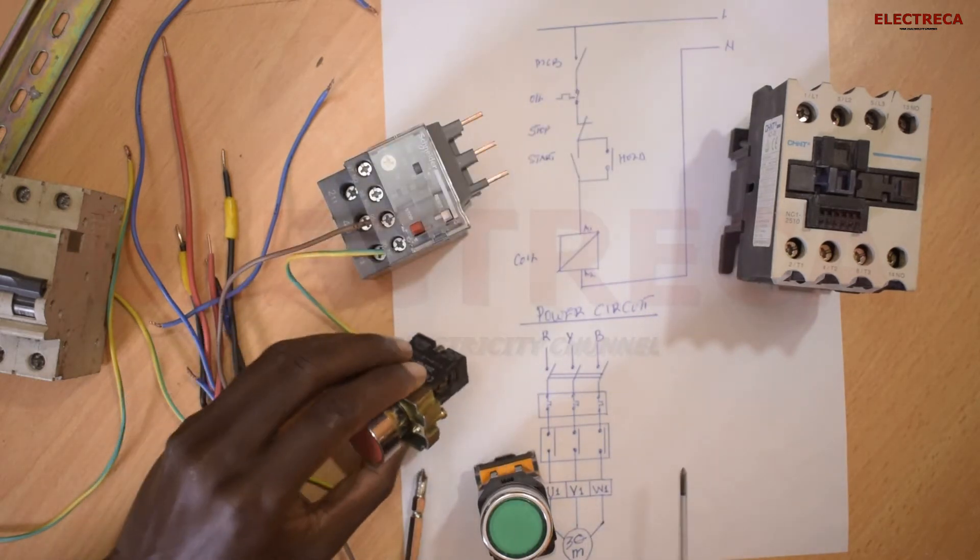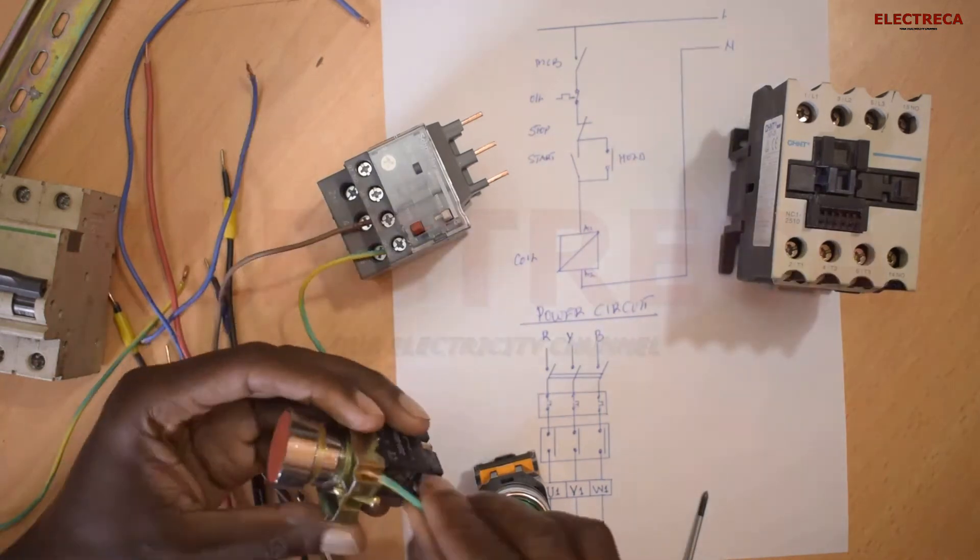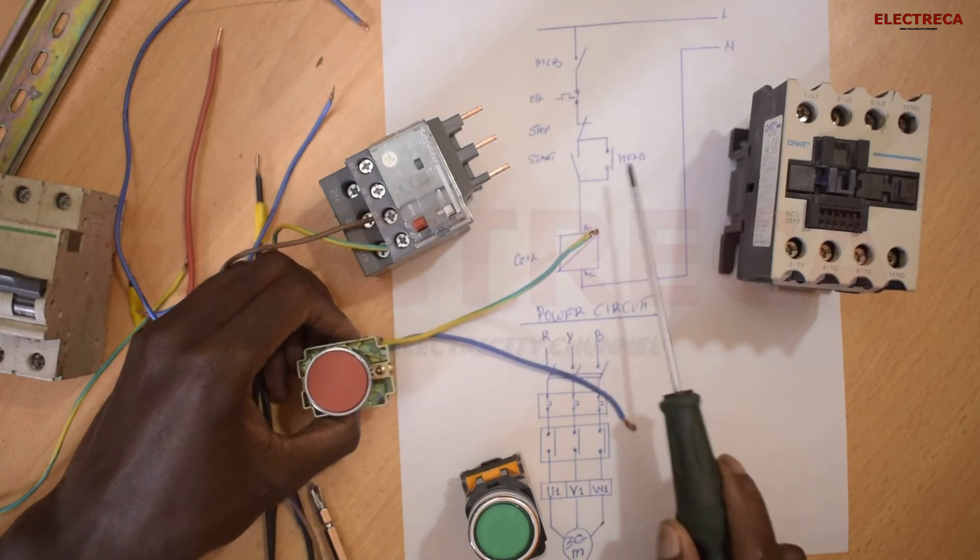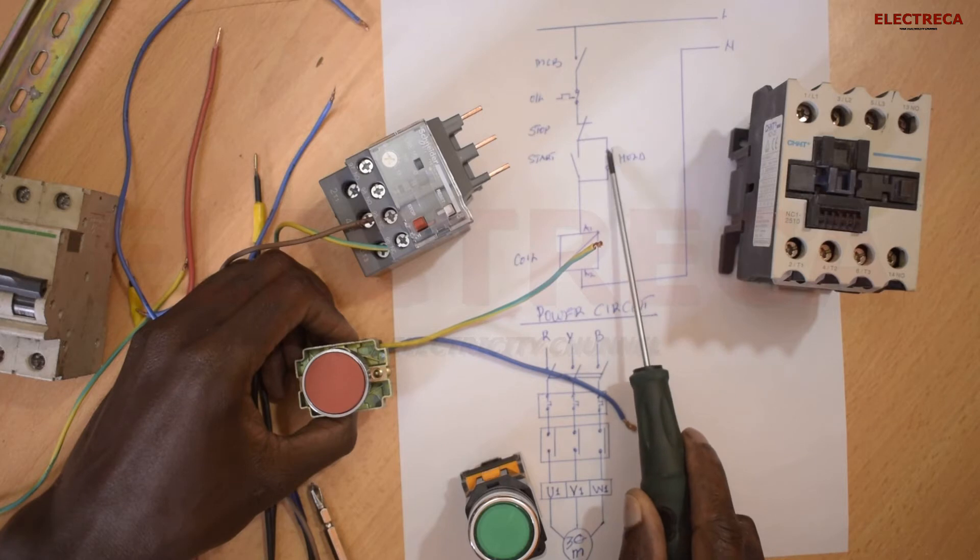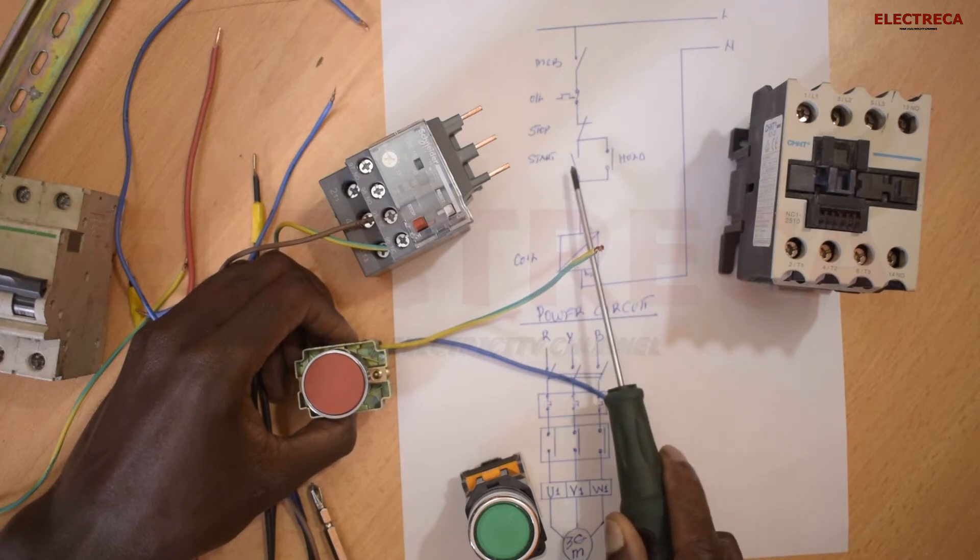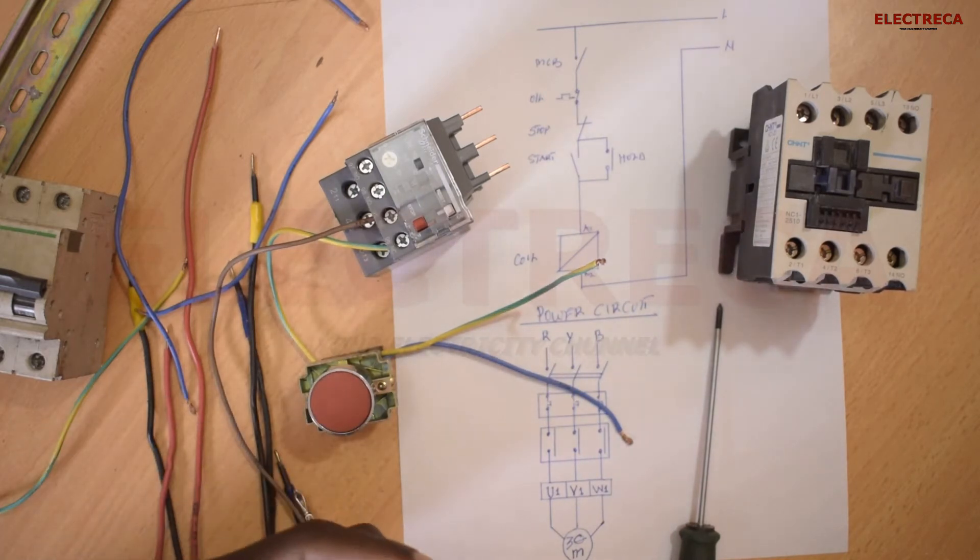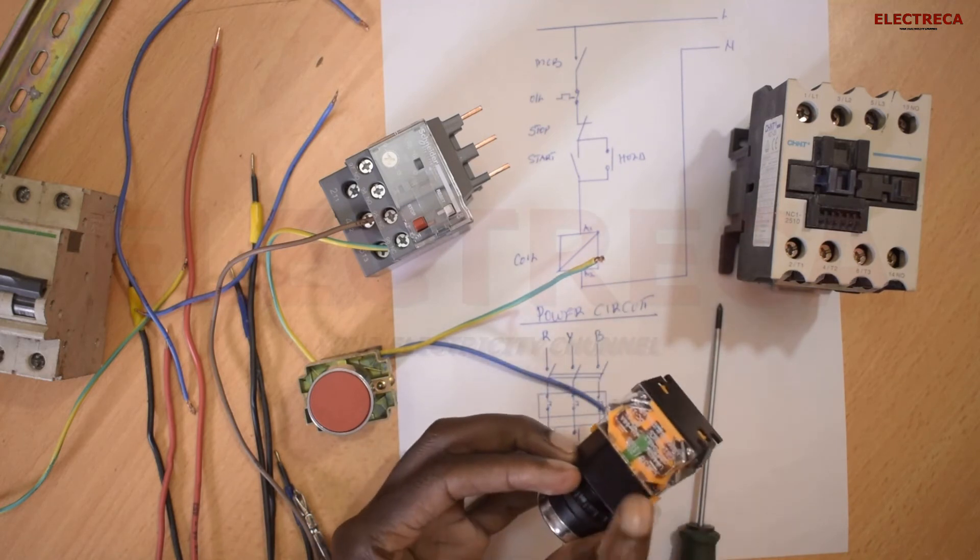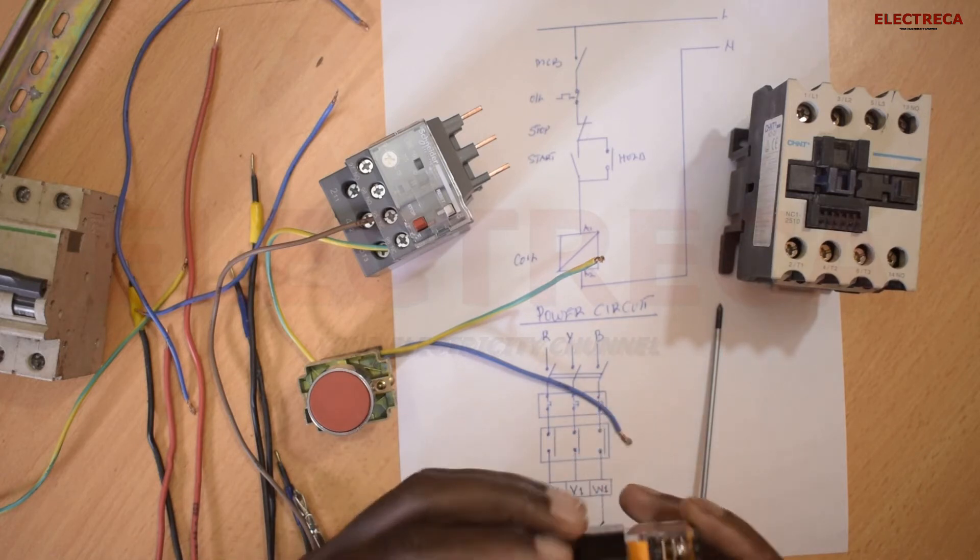Now you can follow this - this is number one, normally closed of this button here, the stop button. All right, now the other side of this stop button, right here, we will put two cables, which is this side here.